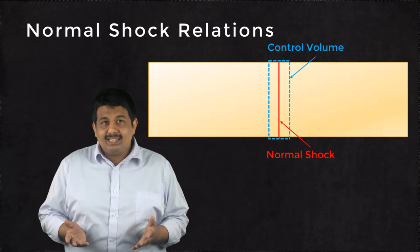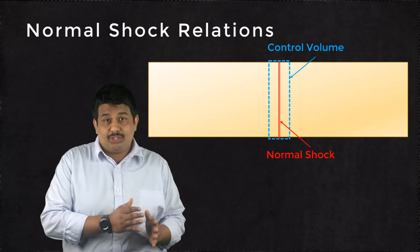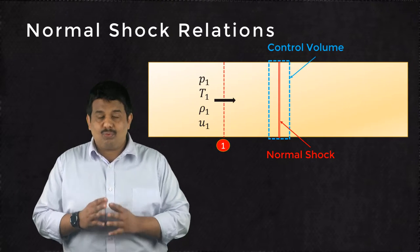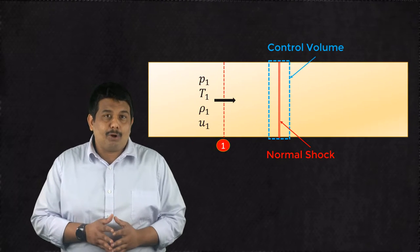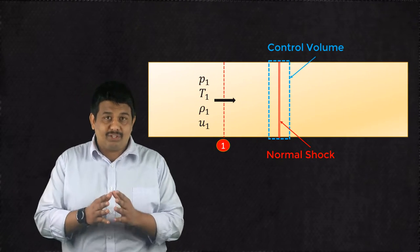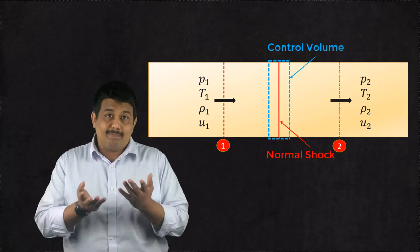Let us say that the flow properties just upstream of the shock are denoted by subscript 1. Our goal would be to estimate the properties just downstream of the shock wave which are denoted by subscript 2.